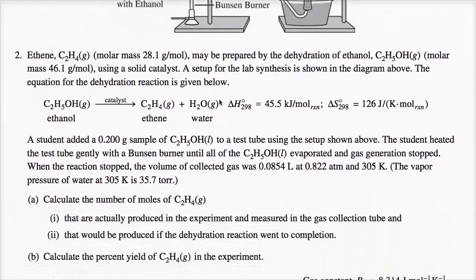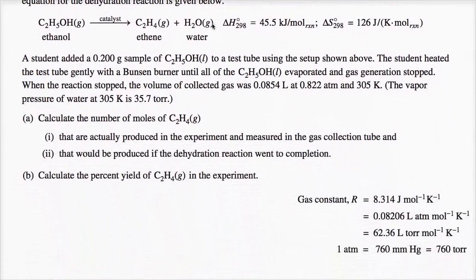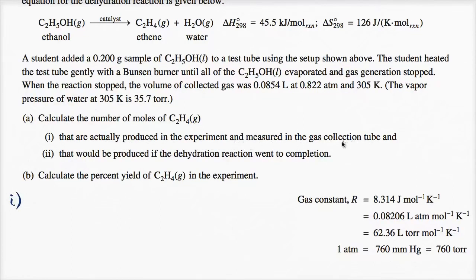We need to calculate the number of moles of ethene: first, that are actually produced in the experiment and measured in the gas collection tube, and second, that would be produced if the dehydration reaction went to completion. Part B asks us to calculate the percent yield of ethene in the experiment. Let's tackle part one first.